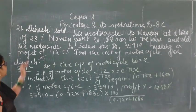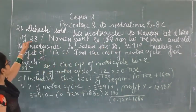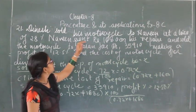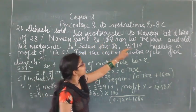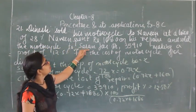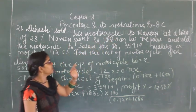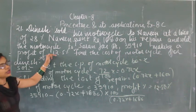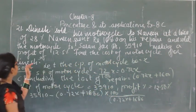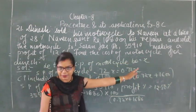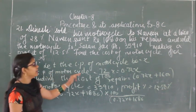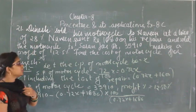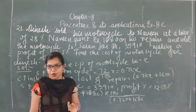Question number 21: A motorcycle is sold at a loss of 28%, meaning it was sold at 72% of its cost price. Then ₹1,680 is spent on repairs, and the motorcycle is resold making a profit of 12.5%. Find the original cost of the motorcycle.